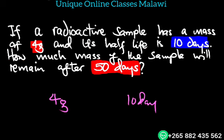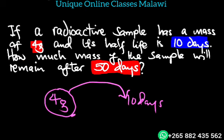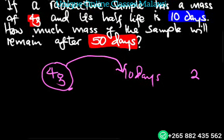Half-life is the time it takes for a mass sample to be reduced by half. If you have the sample, it will be reduced by half. It takes 10 days for the mass sample to be reduced by half. It will be 2 grams.